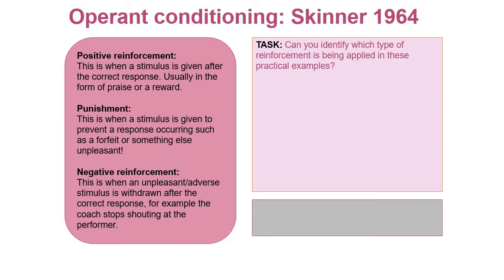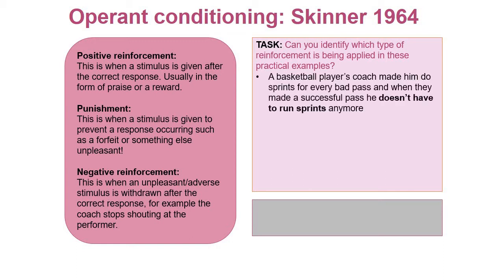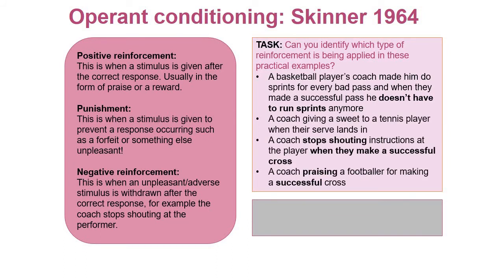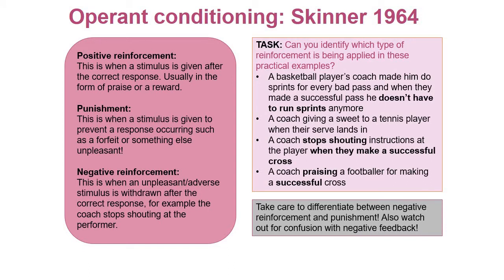A little mini task: can you identify which type of reinforcement is being applied in these four practical examples - is it positive reinforcement, punishment, or negative reinforcement? A basketball player's coach made him do sprints for every bad pass, and when they made a successful pass he doesn't have to run sprints anymore. A coach giving a sweet to a tennis player when their serve lands in. A coach stopped shouting instructions at the player when they make a successful cross. And a coach praising a footballer for making a successful cross. Pause the video and have a go.